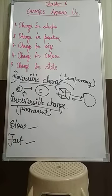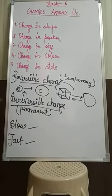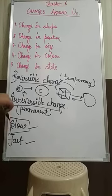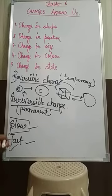They come under the category of slow changes: ripening of fruits, setting of milk to form curd, and changes of seasons — all are slow changes. Whereas bursting of a cracker, burning of paper, spinning top, burning of cooking gas — all these come under fast changes. They take place within a short period of time.